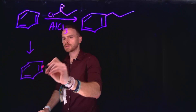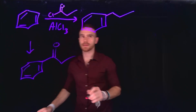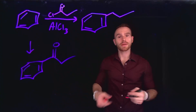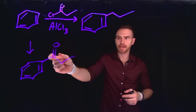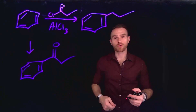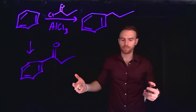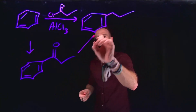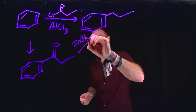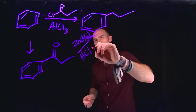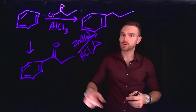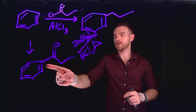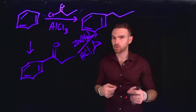Instead, what we can do is a Friedel-Crafts acylation, wherein we are attaching an acyl group, which would produce the desired product because we wouldn't have that same hydride shift. This produces a product with a carbonyl group. Now importantly, this is not the final product we desire — however, if you recall from previous chemistry courses, there are conditions that allow you to reduce this acyl group into an alkyl group. That would be zinc with mercury and hydrochloric acid with heat, known as a Clemmensen reduction. So the pathway is a two-step process: Friedel-Crafts acylation followed by reduction of the acyl group to an alkyl group.